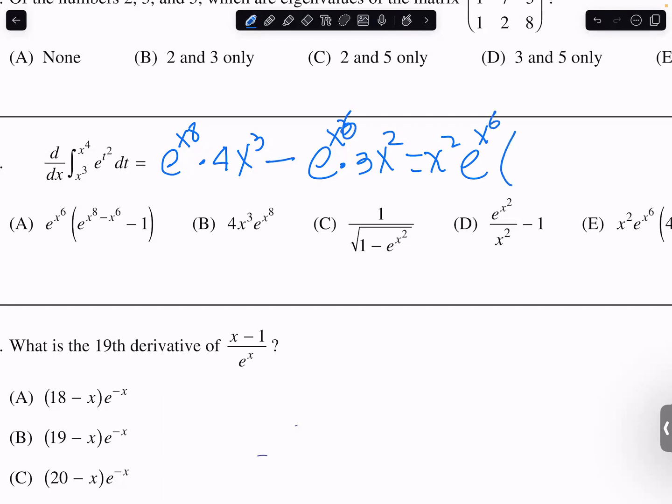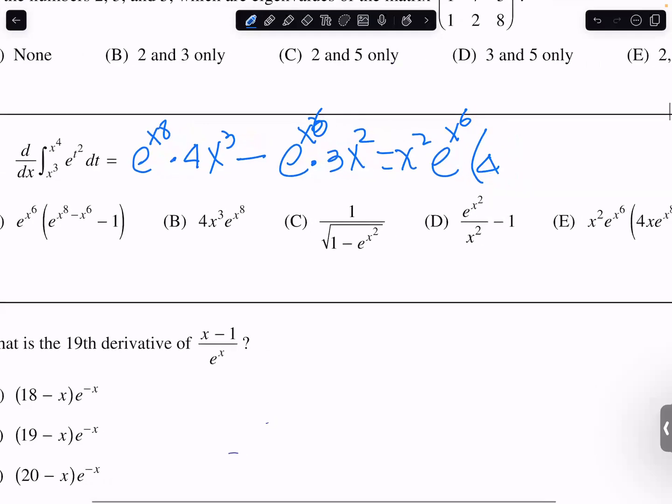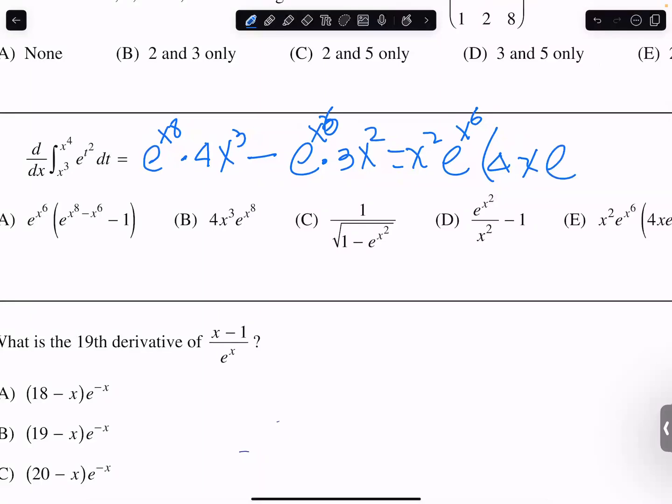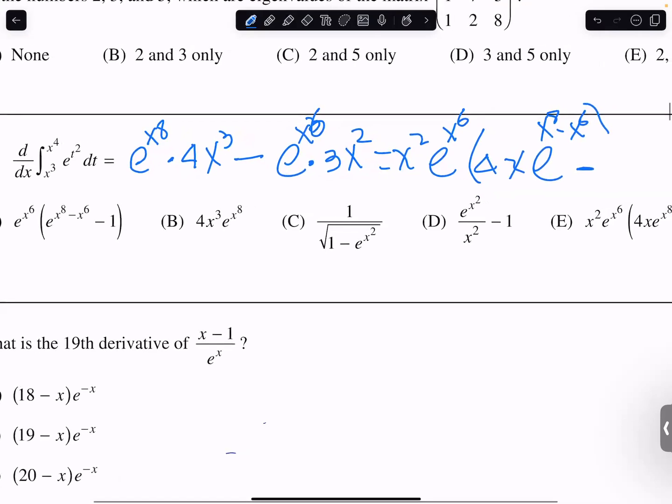Inside is going to be 4 times x, e to the x to the 8 minus e to the x to the 6, minus 3.